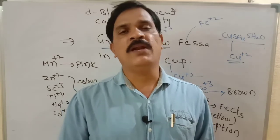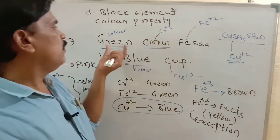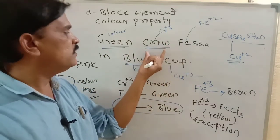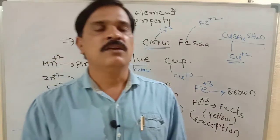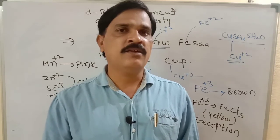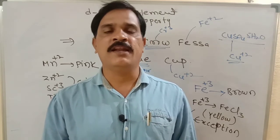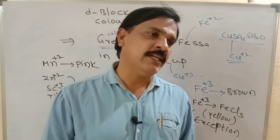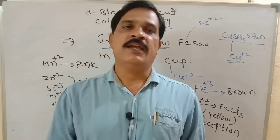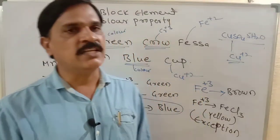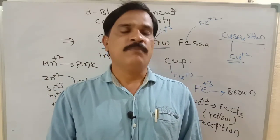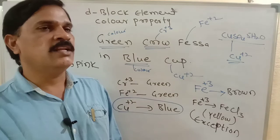So many metal ions show their complementary color in D-block elements. But D-0 and D-10 electronic configurations result in colorless compounds. If any unpaired electrons are present, the ion is colored. Remember the trick: 'Green crow, Fesa in blue cup' to identify the colors of Cr³⁺, Fe²⁺, and Cu²⁺. Please like, comment, share, and subscribe if you like my videos.